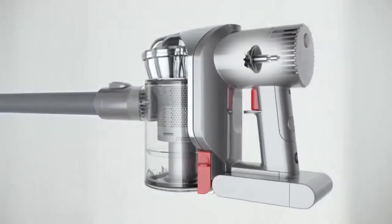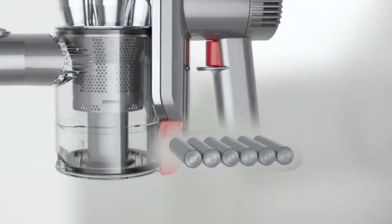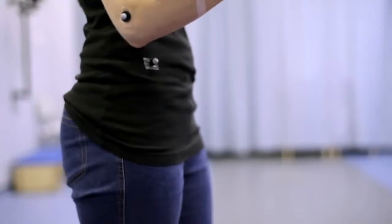The Dyson Digital Motor V2 spins over a hundred thousand RPM, delivering high constant suction. It's combined with a lithium-ion battery to give you the versatility of a cordless machine.